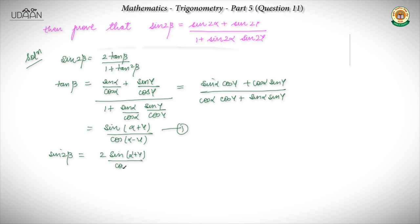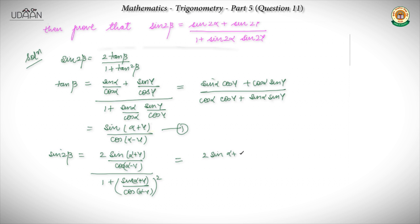Sin 2β will give us 2 sin(α+γ) upon cos(α-γ), upon 1 plus [sin(α+γ) upon cos(α-γ)]². When I cancel numerator and denominator terms, I get: 2 sin(α+γ) cos(α-γ) upon cos²(α-γ) plus sin²(α+γ).